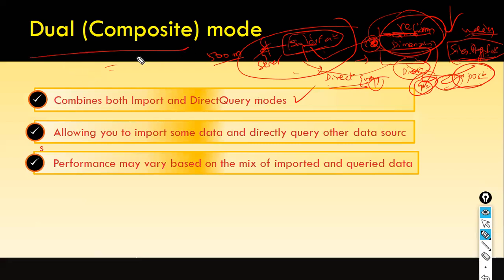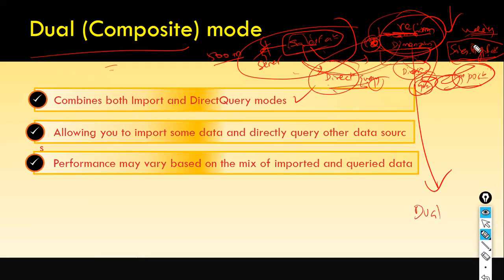That is when dual mode comes into picture. Once you enable the region dimension table in dual mode, whenever you join it with the sales fact table (which is in direct query mode), it automatically switches to direct query mode. And whenever you join it with the sales aggregated fact table (which is in import mode), it automatically switches to import mode. This automatic switching between storage modes is what dual mode enables.